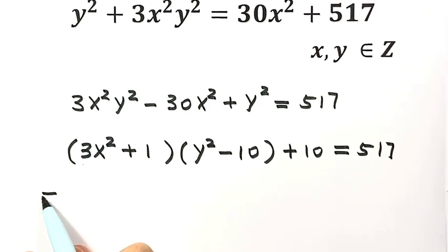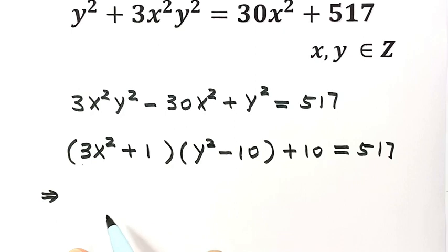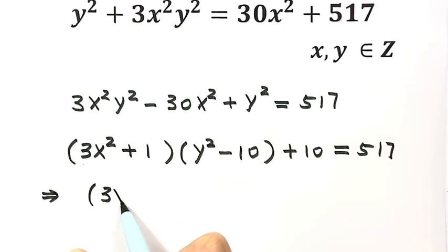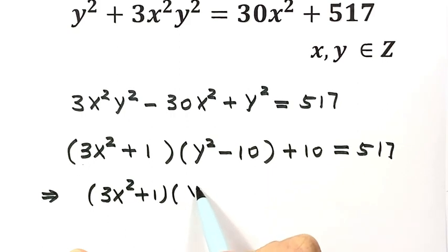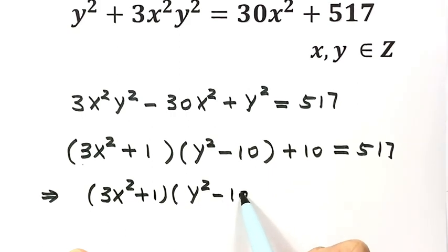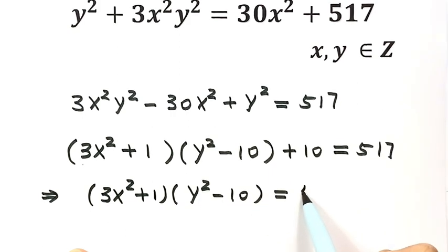Next, let's move this term to the left hand side. This is the first factor and here's the second factor. So this factor then equals 507.